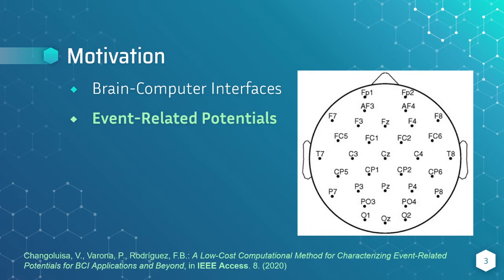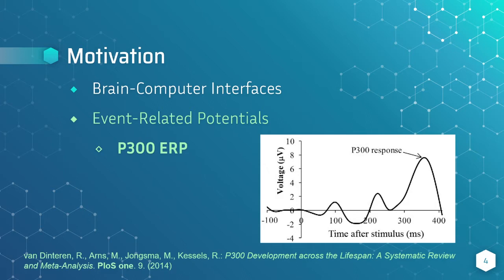An ERP always presents positive or negative voltage deflections, and we can recognize them. These deflections appear with a certain latency after the stimulus is presented. One of the most used ERPs in BCIs is the P300. It stands out for its positive deflection that happens with a latency of around 300ms after the stimulus presentation.